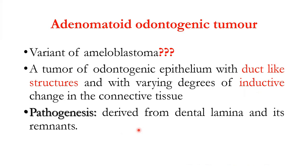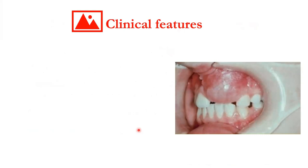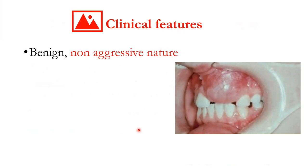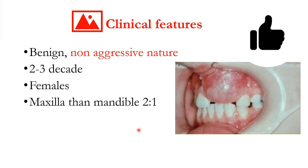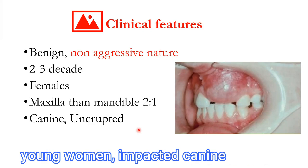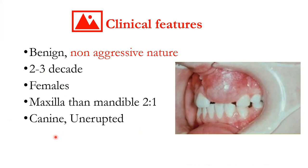Dental lamina and its remnants are thought to give rise to AOT. Clinically, it has quite a distinctive picture. It is benign and non-aggressive, opposite to ameloblastoma. It is usually seen in the second to third decade of life, in the anterior maxilla. Young women are more commonly affected, and an unerupted canine is the most common associated tooth.